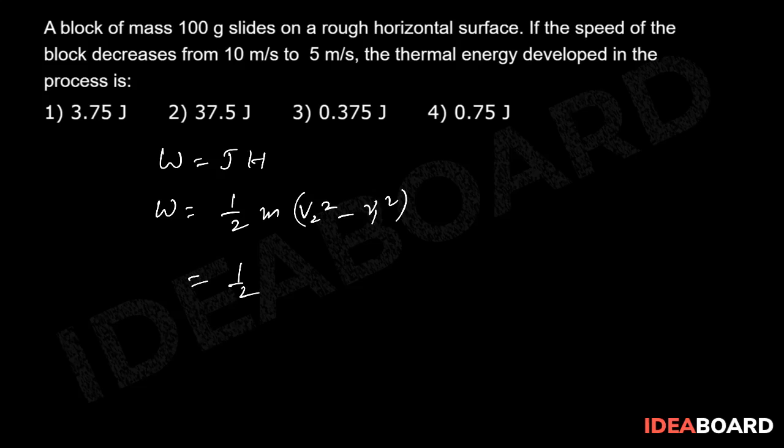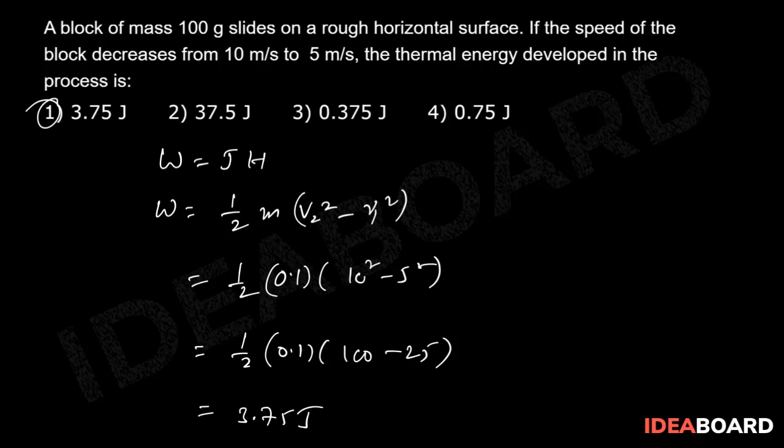Half times 0.1 times (10 squared minus 5 squared), which equals half times 0.1 times (100 minus 25), which equals 3.75 joules. So option one is the correct answer.